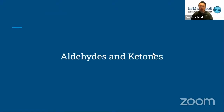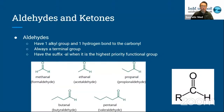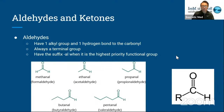I'm going to go into aldehydes and ketones. Aldehydes only have one alkyl group and one hydrogen bonded to the carbonyl. They are always a terminal group, so they're always at the end of the molecule. When naming them, they have the suffix AL at the end when it's the highest priority functional group in the molecule. On the bottom right, I just have the general structure of an aldehyde.